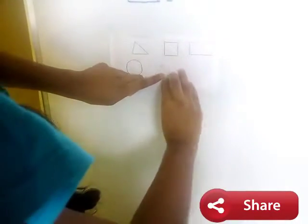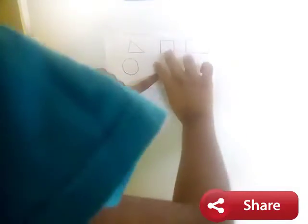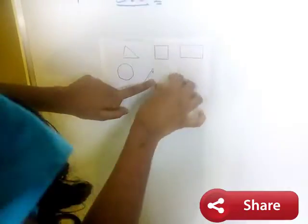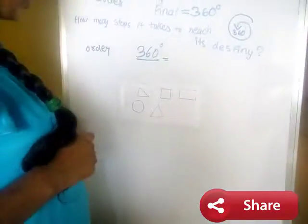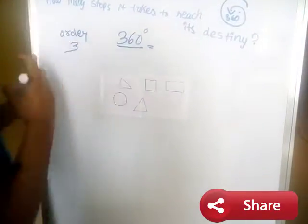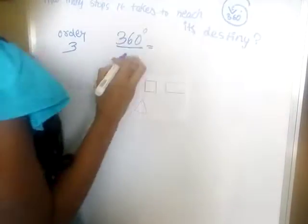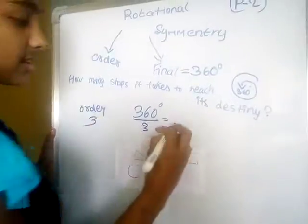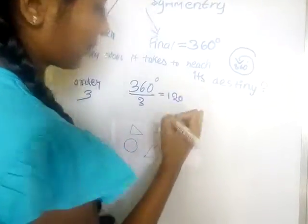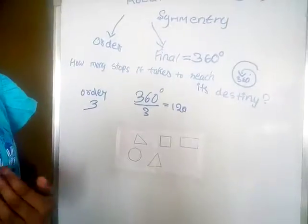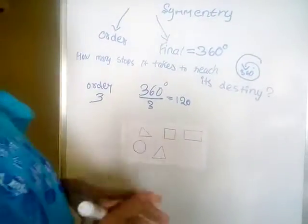1, it came correctly. 2. 3. So this is 3. So the order is 3. So we need to do 360 by 3. The answer is 120. So 120 degrees.